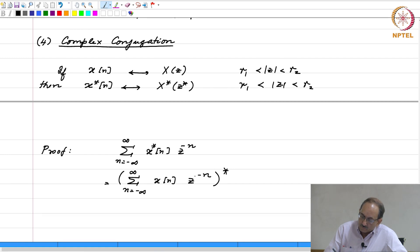But then if you do this, this is not what the previous line is. To make it equal to the previous line, you have to replace z by z star. Therefore, this by definition, what is inside the brackets is X of z star. And to account for the final complex conjugate, you have X star of z star.